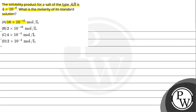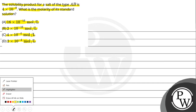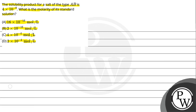First option is 16 × 10⁻¹⁶ mol per liter. Second option is 2 × 10⁻¹⁶ mol per liter. Third option is 4 × 10⁻⁴ mol per liter. And the fourth option is 2 × 10⁻⁴ mol per liter.